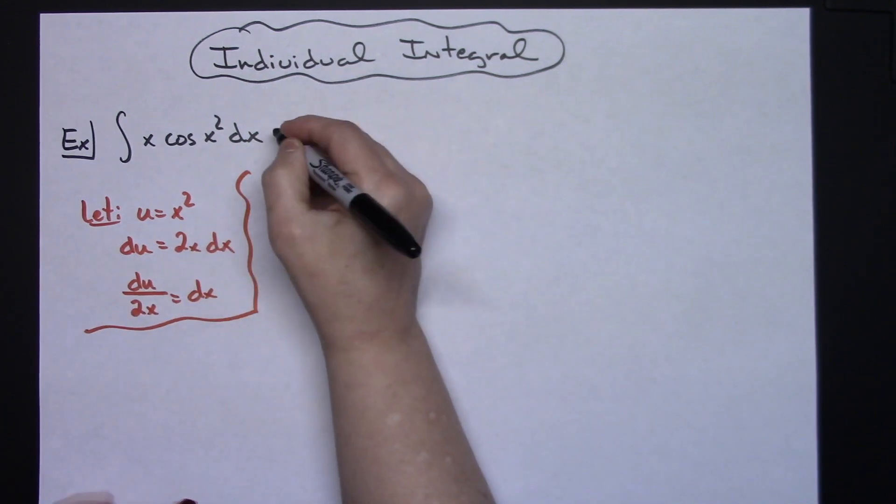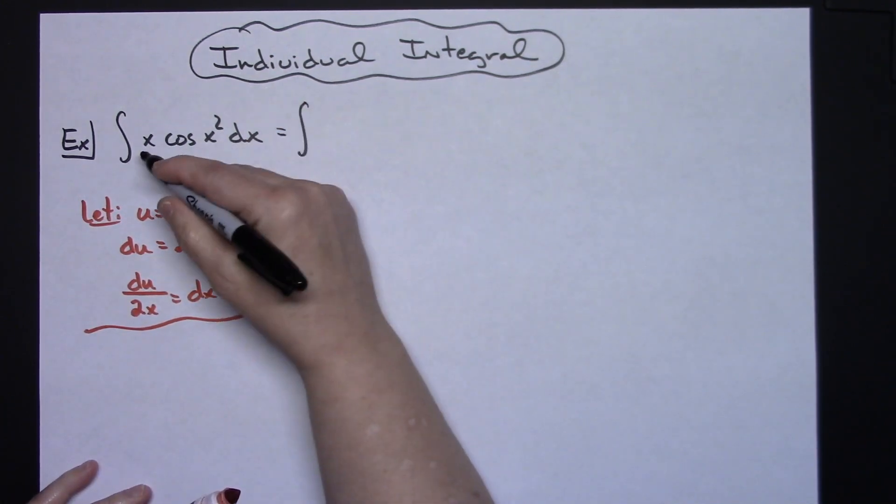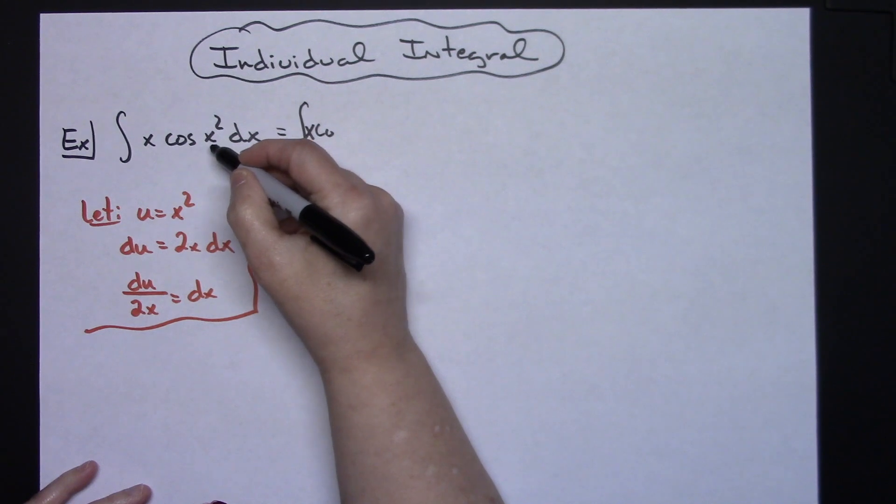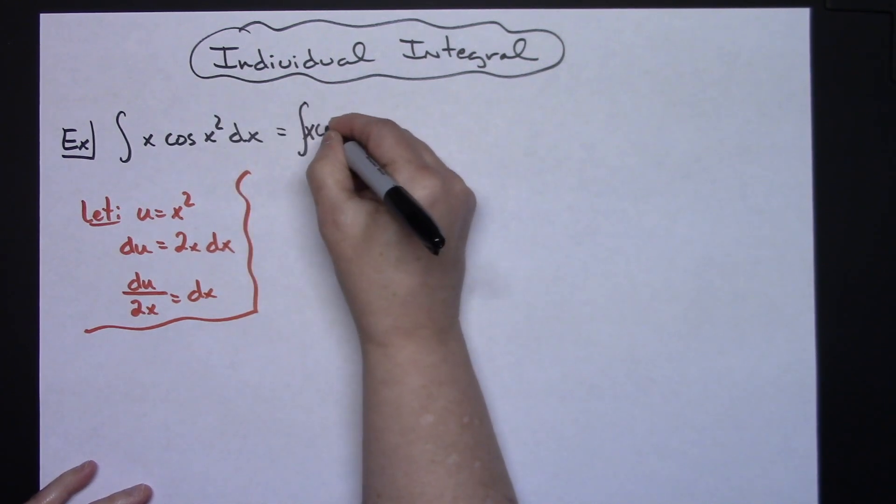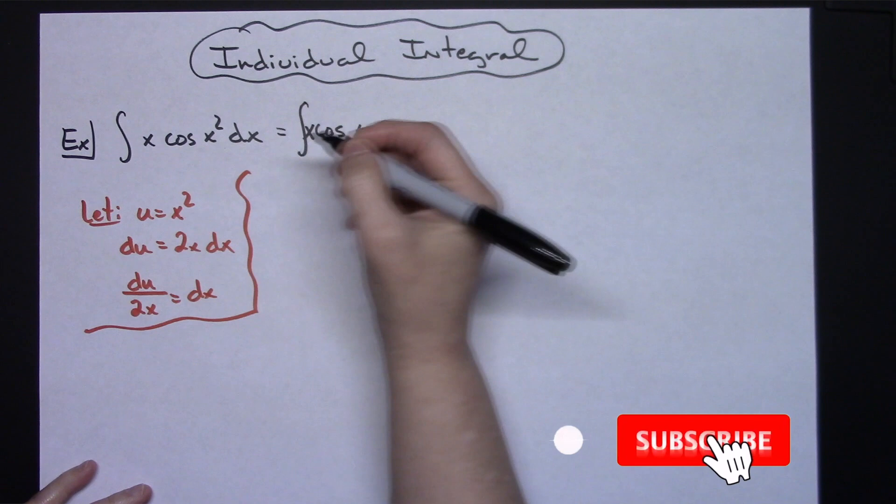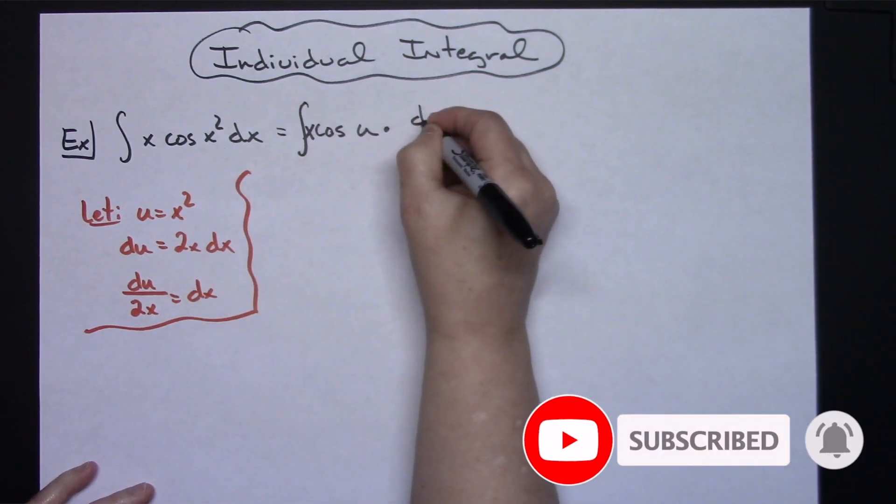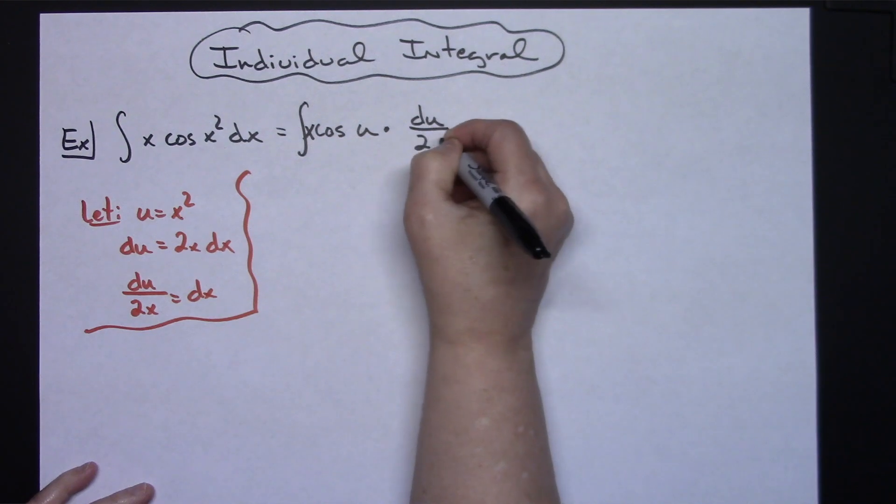Now I'm going to come up to my original problem and I'm going to start replacing. The x is going to stay there, so I write cosine. My cosine of x squared I'm going to replace that with a cosine of u because I'm replacing the x squared with my u, and then I'm going to replace the dx with my du over that 2x.